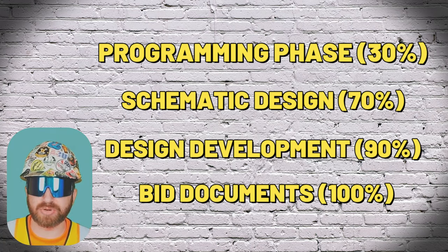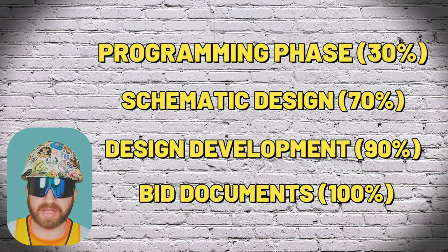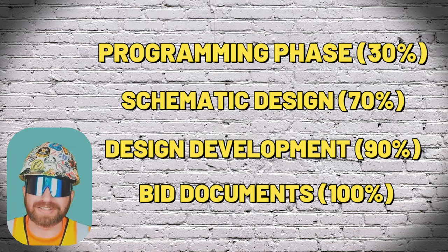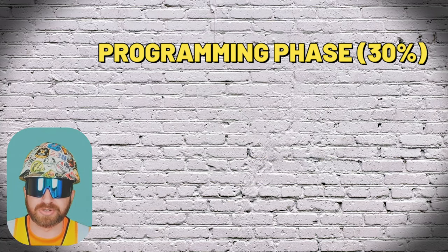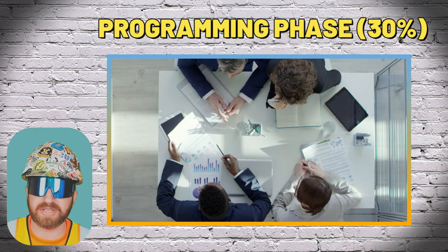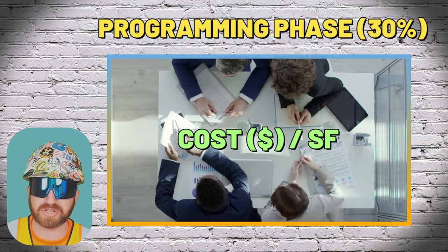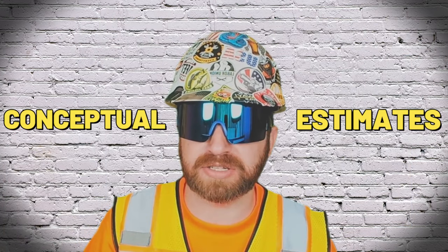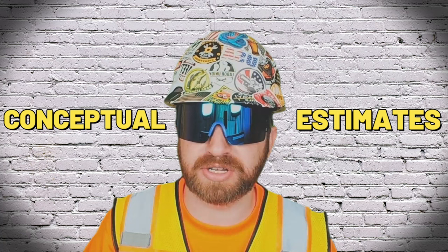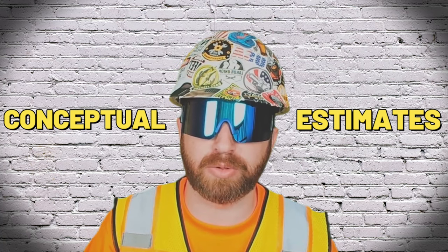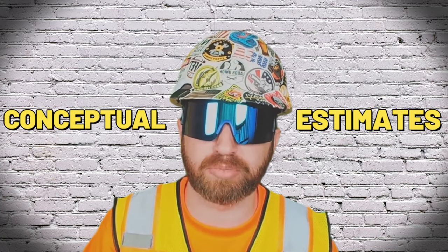The architect and design team are usually able to assist the owner in understanding general costs along the way as well. When estimating at the programming phase, you're talking extremely high level because there are really no drawings yet. The GC, CM, or owner's rep will often share a cost-per-square-foot estimate based on similar recently completed projects. These are typically referred to as conceptual estimates and give the owner an initial gut check on whether to move forward.